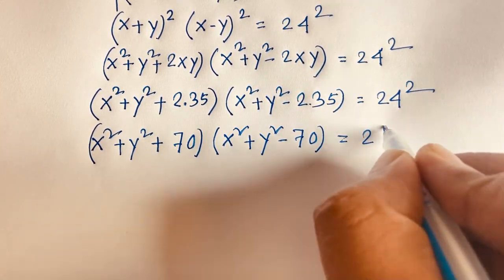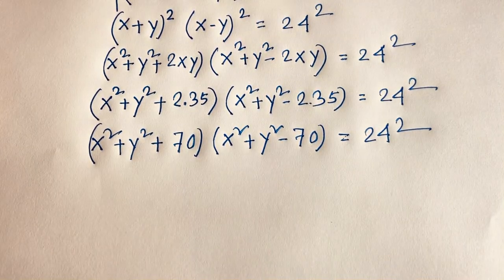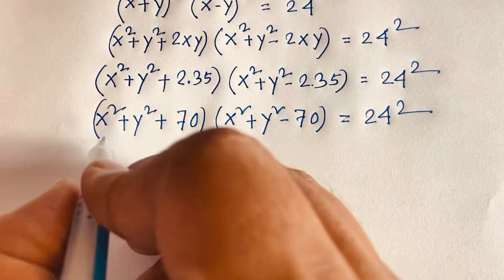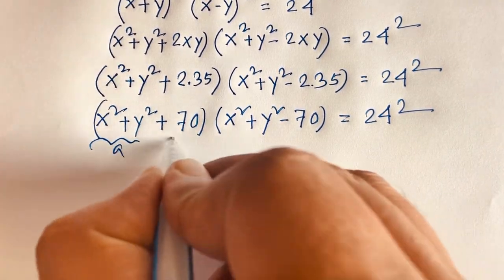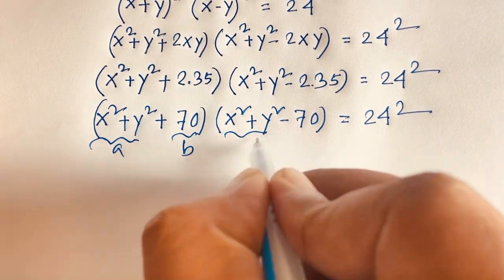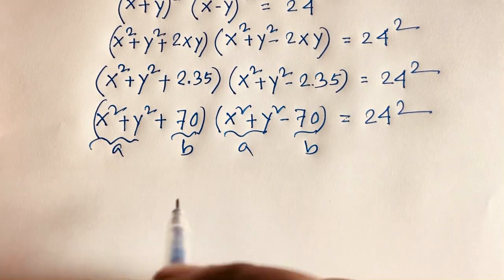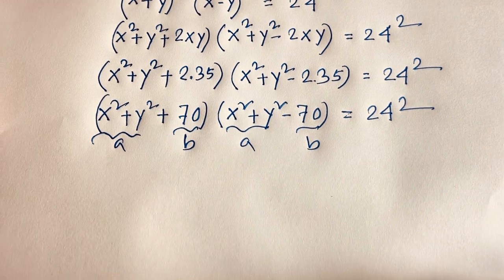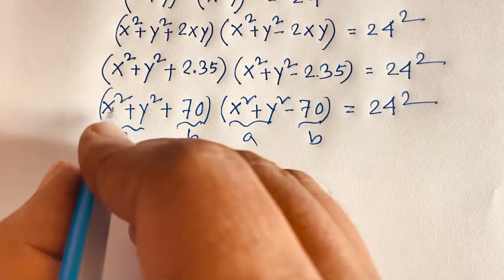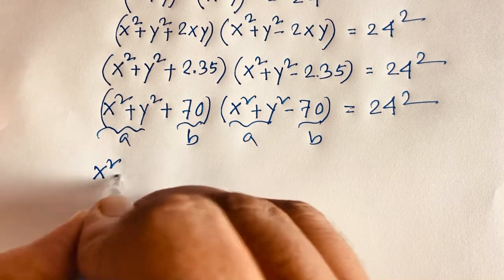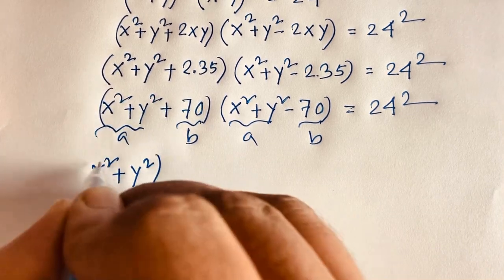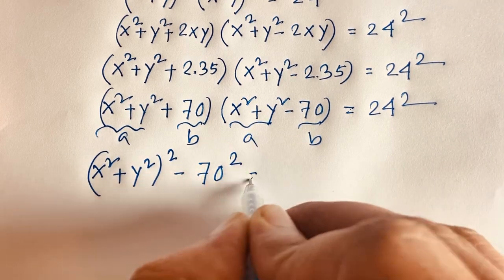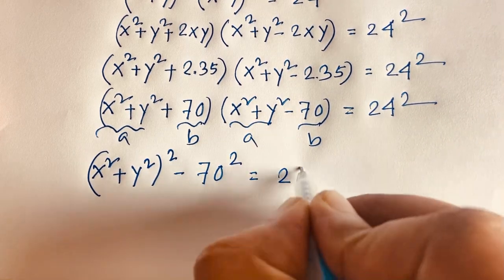This equals 24 squared. Now if we let A = x squared plus y squared and B = 70, we can apply the rule (a plus b)(a minus b) equals a squared minus b squared. So this expression becomes (x squared plus y squared) squared minus 70 squared equal to 24 squared.